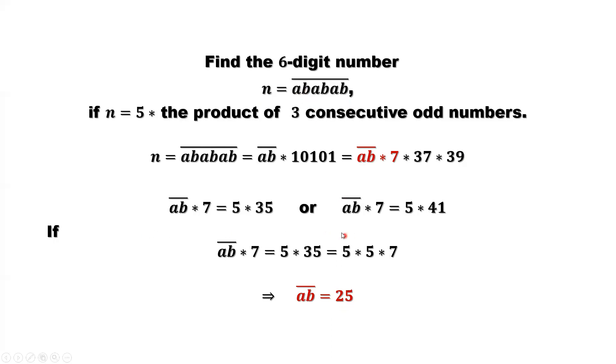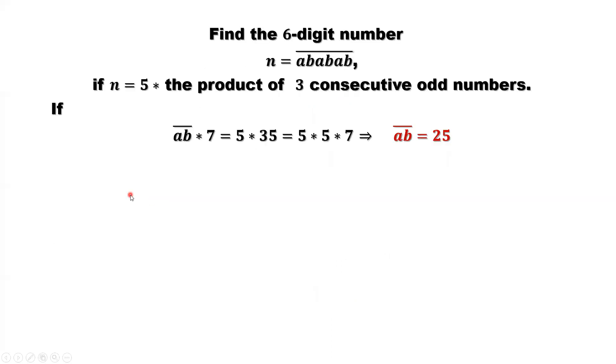Now consider the second situation. AB times 7 equals 5 times 41. In order to solve this equation for AB, so we can both sides divide by 7. Now look, 5 cannot be divided by 7, and 41, we don't have a factor for 41 which is 7. So 41 is not divisible by 7. So we imply this kind of situation is impossible.